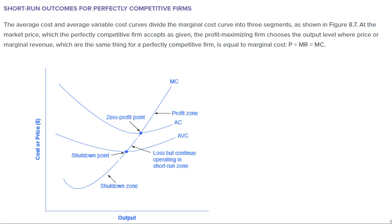I'm going to try to keep this as simple as possible because it gets a little too complex for the average economics class student. You have three key terms here: marginal cost, designated MC; average cost, AC; and average variable cost, AVC.